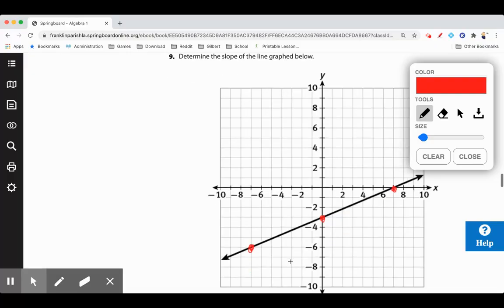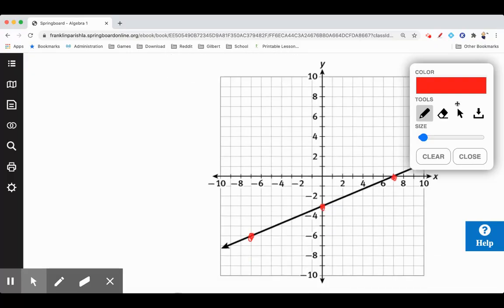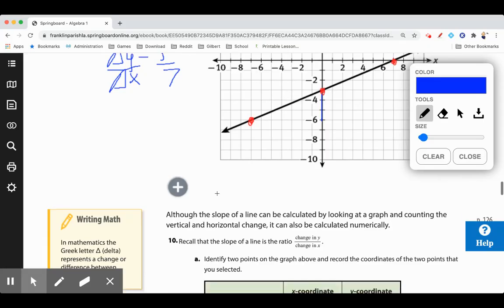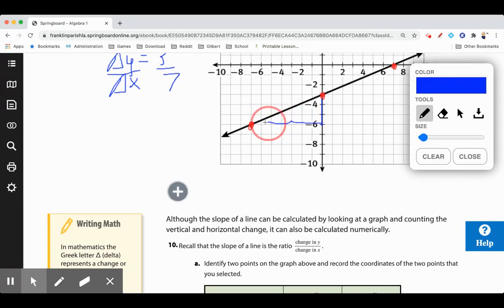Now let's find the slope. So the change in y, that's one, two, three. A change in y of three over a change in x. 1, 2, 3, 4, 5, 6, 7. 3 over 7, that'll be our slope.